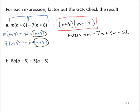Now let's go back to our original expression and apply the distributive property. m times n is mn; m times 8 is plus 8m; minus 7 times n is minus 7n; minus 7 times 8 is minus 56. So they both give us the same thing — this checks out. The terms might be in a different order, but that's OK.